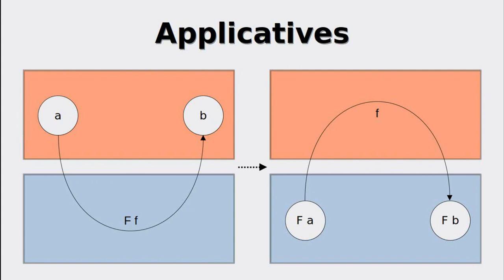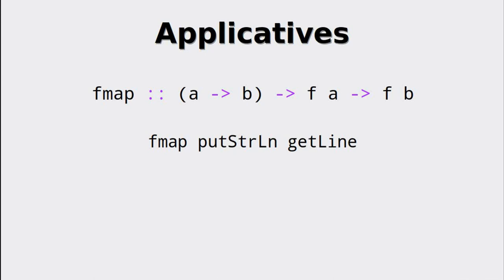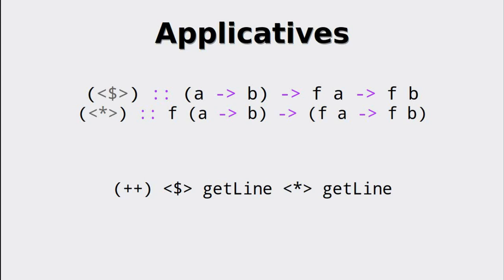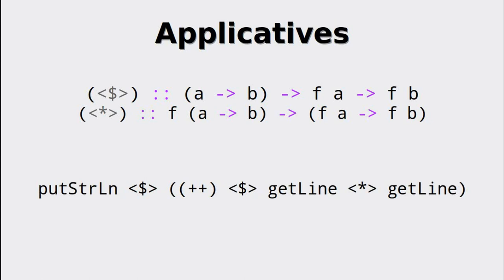Let's look at what we can use applicatives for. First, let's observe this example usage of fmap, which is mapping putStrLn on getLine. Thus, this program will read one line from the standard input and write the line to the standard output. This can be rewritten by the applicative operator with the same semantics as fmap. So now the question is: what if we want to read two lines, then concatenate them, and then print the result to standard output? That cannot be done with fmap, yet it can be done with the applicative operator in conjunction with fmap. After the concatenation, we can print the result like this.